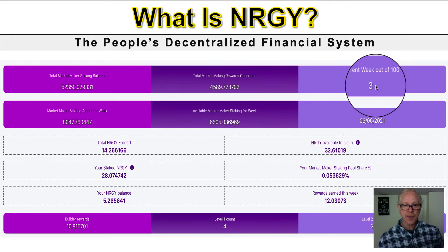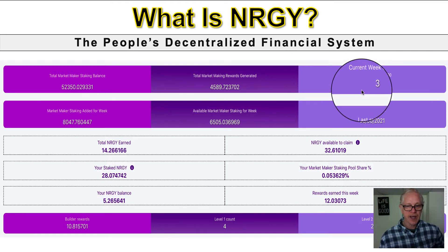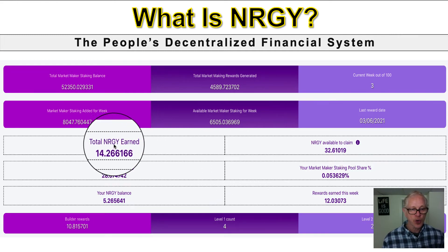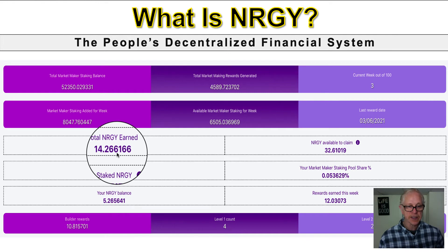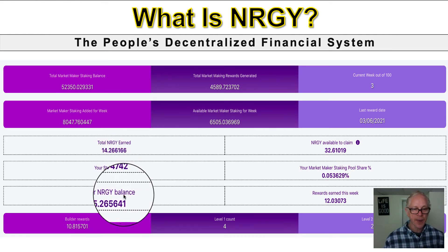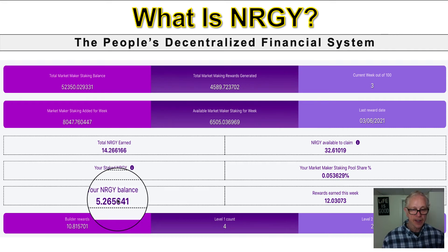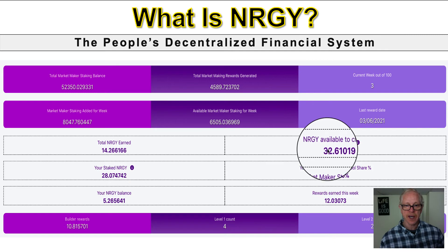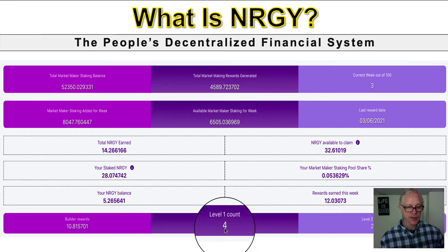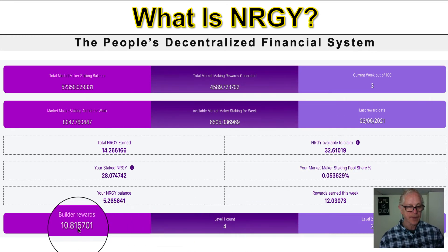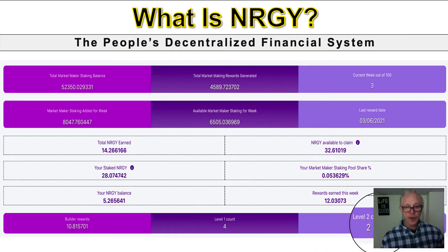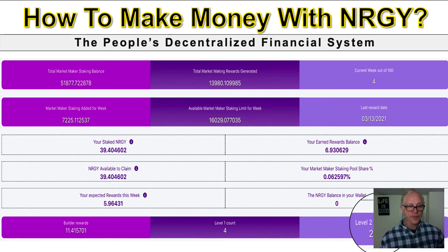Now in week number three, we've grown a little bit and the structure has changed. Total energy earned has been 14.26. What I have staked is 28, and what I have in balance to add in is 5.26, so once I stake it in I now have a total of 32.61. As you can see, I've gotten a few more rewards here - this has grown a little bit as well.